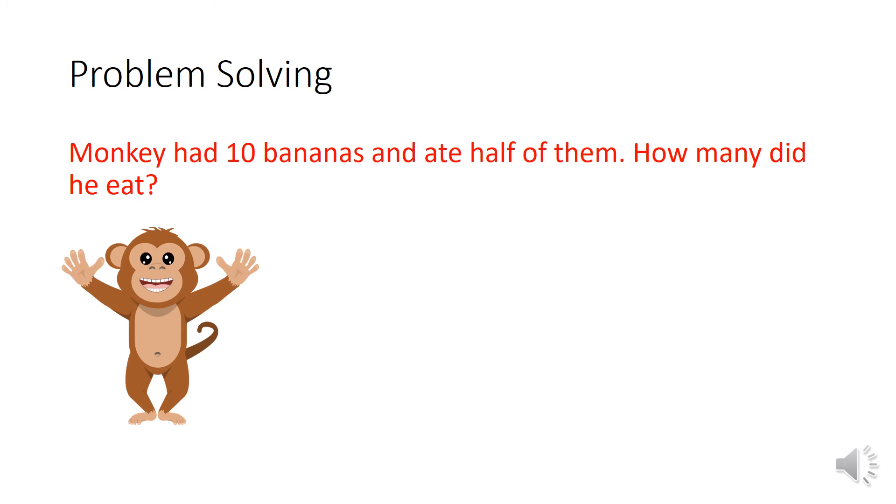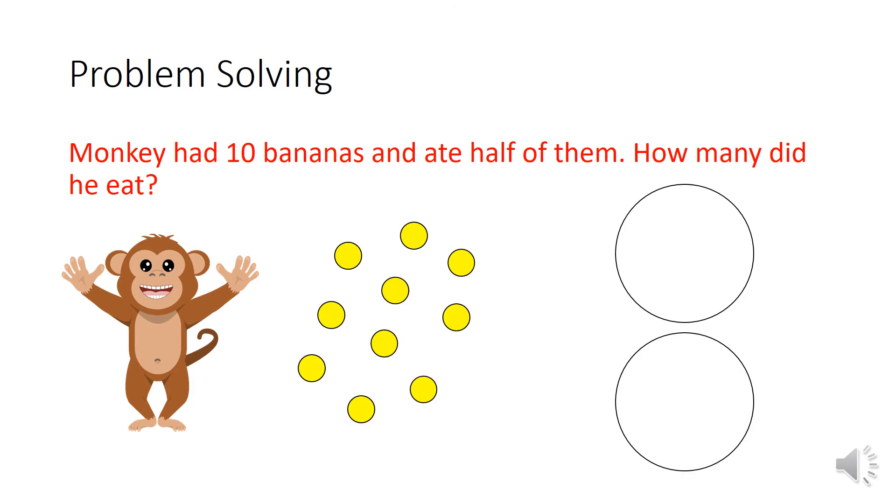So here is our first problem solving question. So make sure you are listening. Monkey had 10 bananas and ate half of them. How many did he eat? I'll read it again. Monkey had 10 bananas and ate half of them. How many did he eat? So this question is telling us that monkey started off with 10 bananas and that he ate half of them. So we've got to find half of 10.